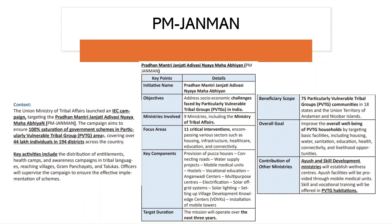Next, a scheme in news is PM JANMAN. The Union Ministry of Tribal Affairs has launched an Information, Education and Communication (IEC) campaign targeting the Pradhan Mantri Janjati Adivasi Nyaya Maha Abhiyan, or PM JANMAN. The main purpose is to ensure 100% saturation of government schemes in Particularly Vulnerable Tribal Group (PVTG) areas, covering at least 44 lakh individuals across 194 districts. Activities include distribution of land entitlements, health camps, awareness campaigns in tribal languages, and reaching gram panchayats and talukas, supervised by local government officials.